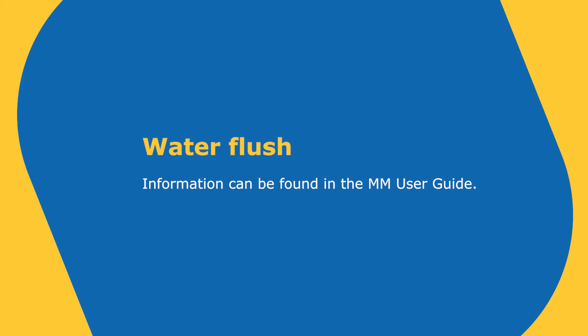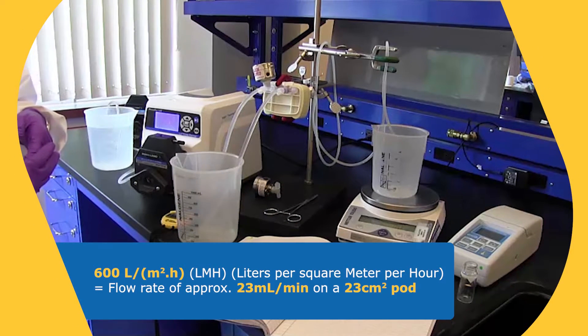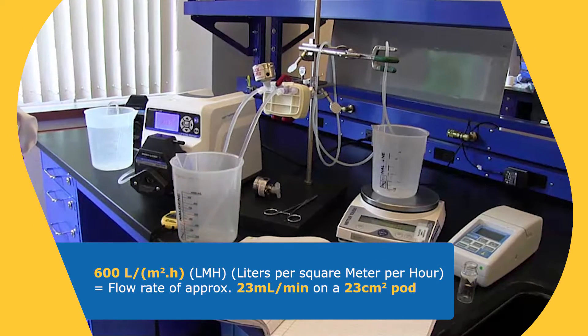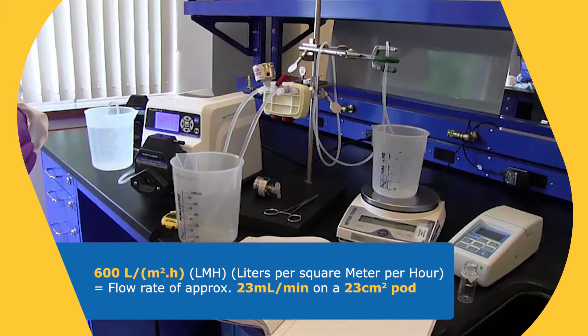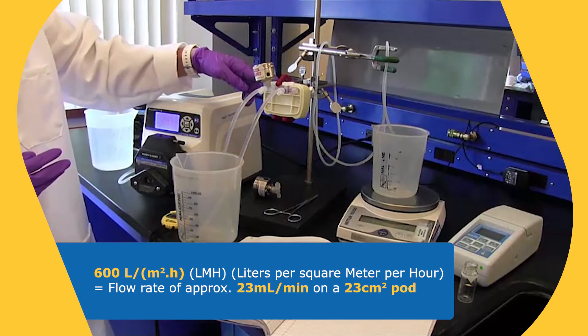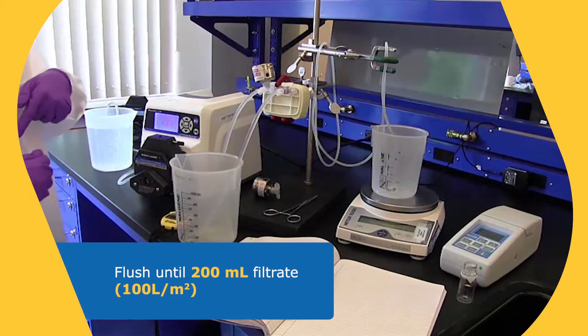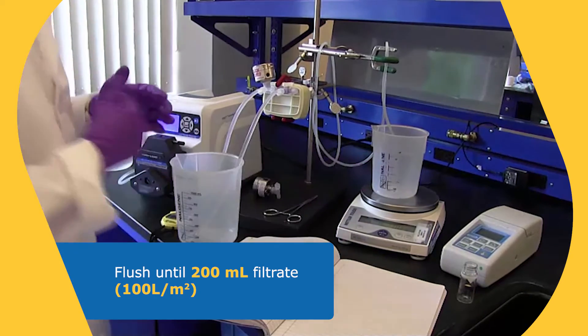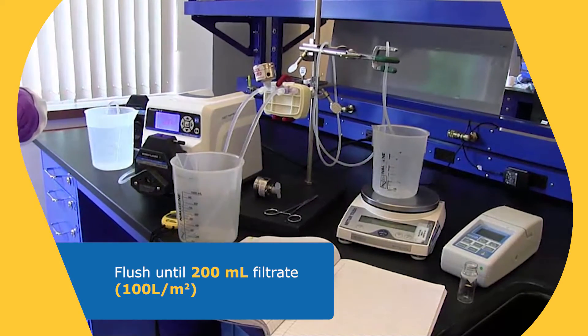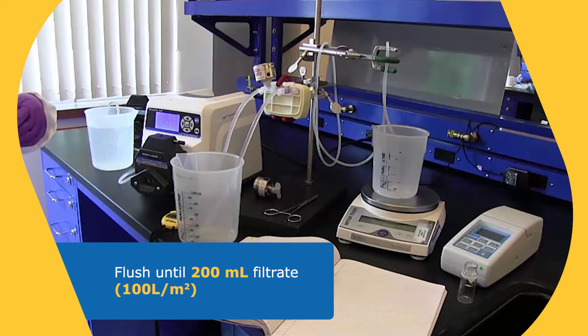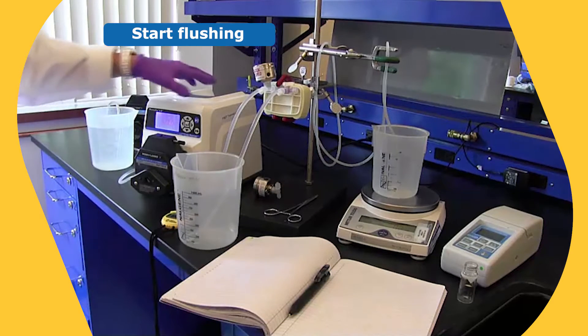So when we start, we're going to start with water flushing. So you can find this information in our user guide, which would be on our website, or you could contact our tech service or your account manager. And the specifications for flushing are 600 LMH. LMH is a flux term, and it's liters per meter squared per hour. So when you do the calculation to account for 23 square centimeters, your flow rate is approximately 23 mils per minute. And we're going to flush until we reach 200 milliliters in the bucket, and that's going to be equal to 100 liters per meter squared for a volume for loading.